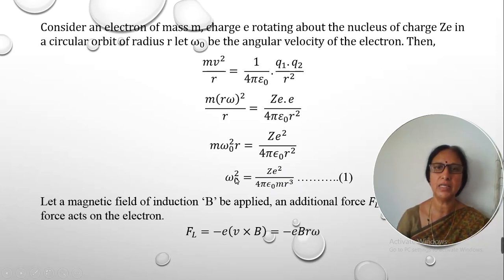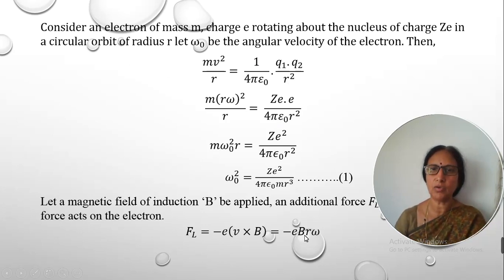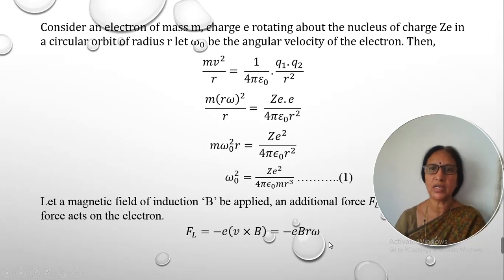When this electron is subjected to an external magnetic field, in addition to the Coulomb's force of attraction it also experiences a Lorentz force, given by the expression eBrω. Here the negative sign on e indicates the electron charge is negative, so the Lorentz force is −eBrω. The total force means centripetal force is balanced by the sum of the Coulomb's force and the Lorentz force.